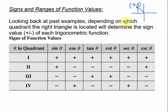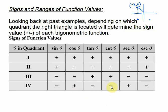In the third quadrant, x is negative and y is negative, so sine and cosine are both negative, but tangent is y over x, so tangent is going to be positive because negative divided by negative is positive. Its reciprocals have the same signs. In the fourth quadrant, sine — my y value — is going to be negative, but cosine — my x value — is positive. Tangent is going to be negative because we have a negative divided by a positive, and the reciprocal functions have the same signs.